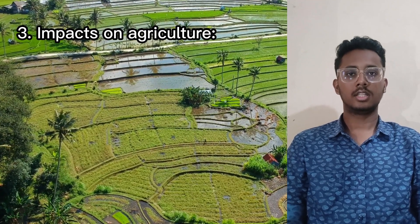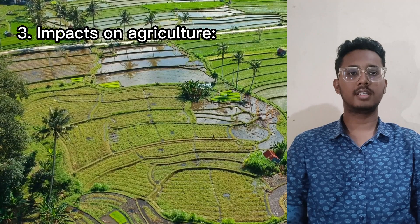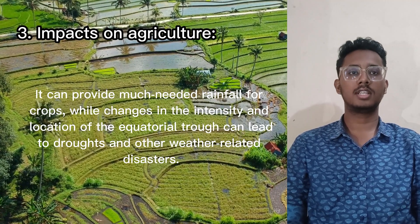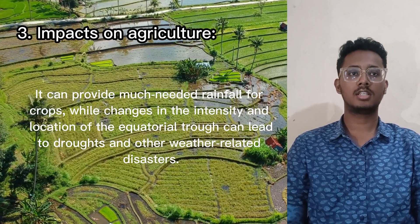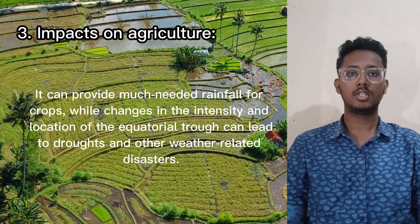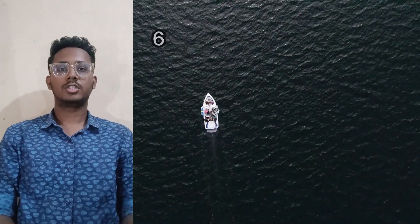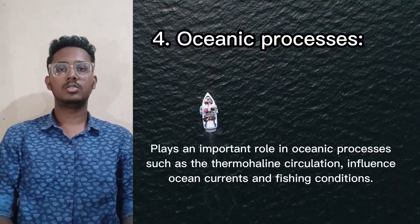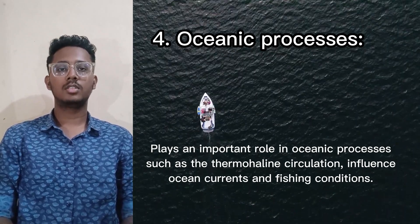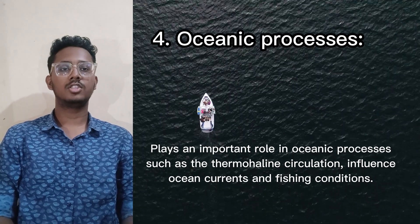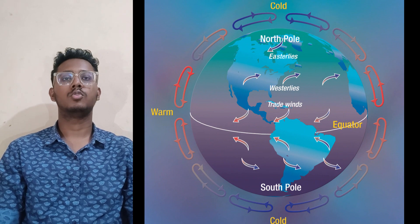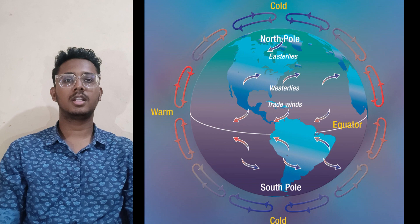Impact on agriculture: The equatorial trough can have a significant impact on agriculture in the affected regions. It can provide much needed rainfall for crops, while changes in the intensity and location of the equatorial trough can lead to drought and other weather-related disasters. Oceanic processes: The equatorial trough plays an important role in oceanic processes such as thermohaline circulation, and can also influence ocean currents and fishing conditions. Atmospheric circulation: The equatorial trough is a key part of the atmospheric circulation system, which drives the movement of air and weather patterns around the Earth.